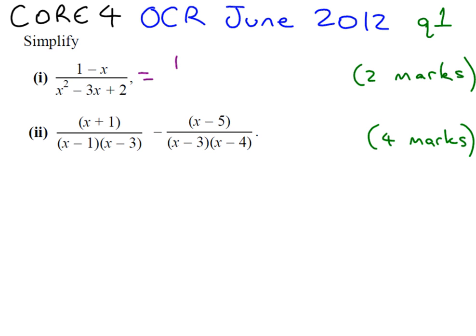Now if we notice 1 minus x on the top of our fraction, we want to try and factorize the quadratic expression on the bottom of our fraction. So if we factorize it to x minus 2, x minus 1, we might be a little bit disappointed that none of our factors cancel.